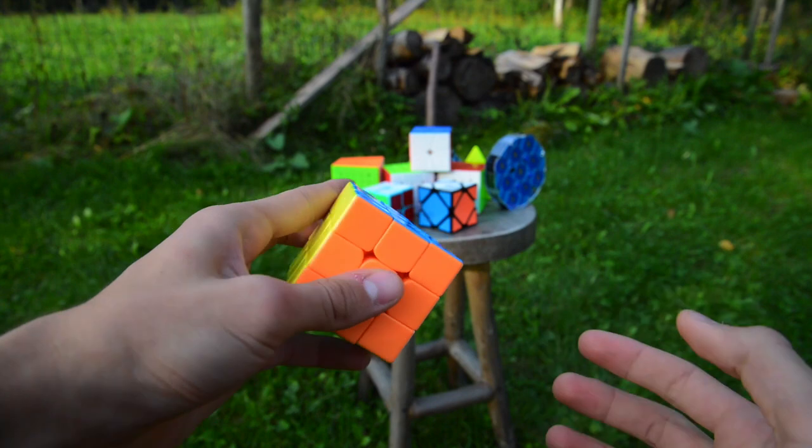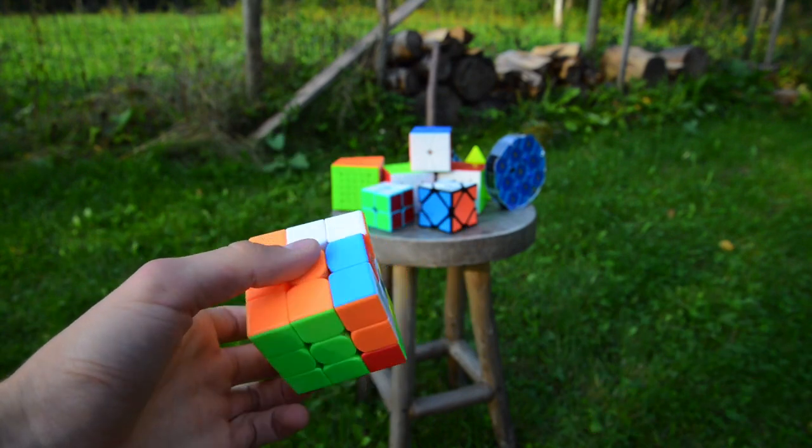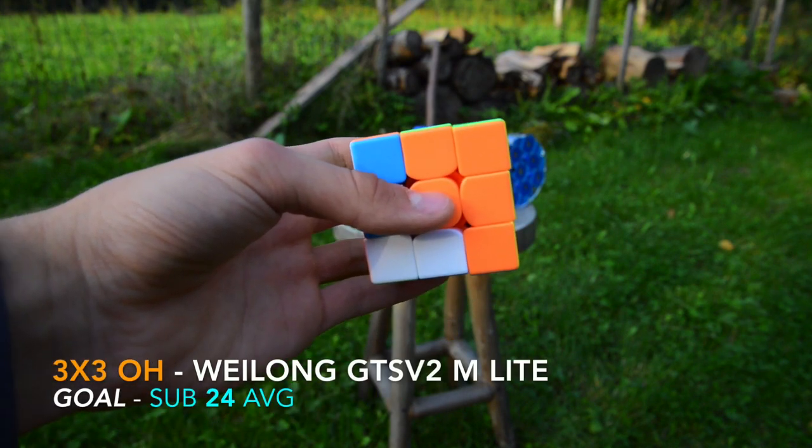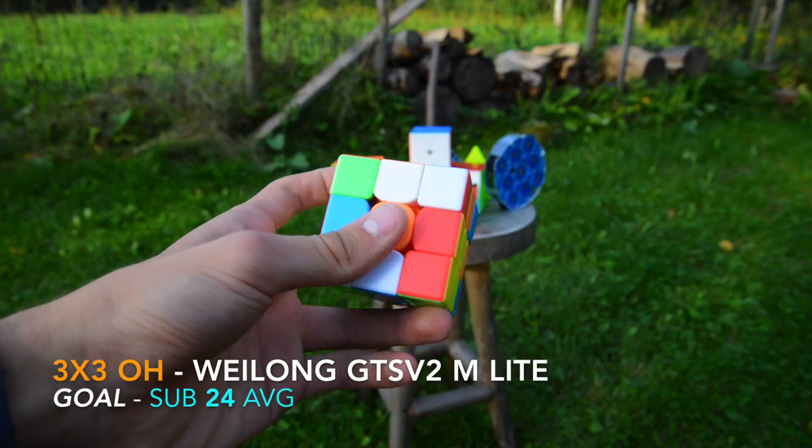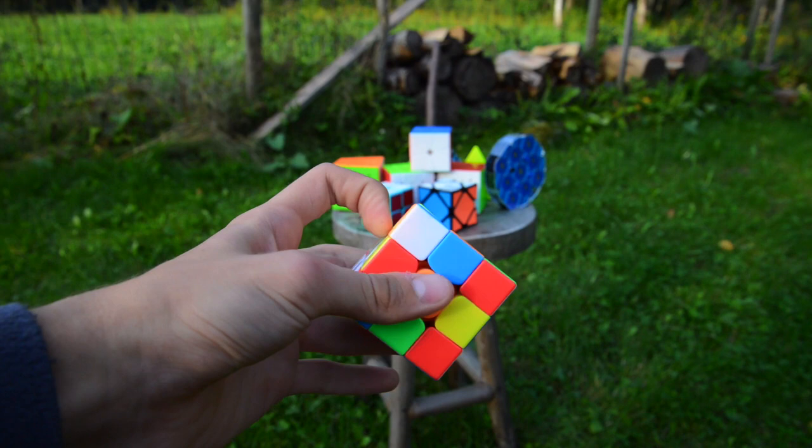Next up is one-handed and I'm going to be using the same cube. I think I just messed up. I'm just going to use the other side. My goal is going to be sub-24 average. I think I can do it. I'm not sure, but I'll try.